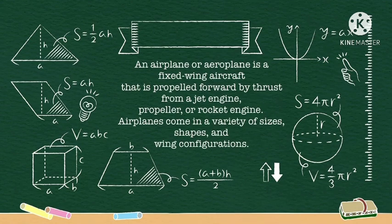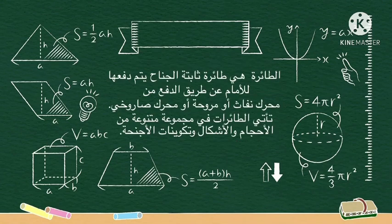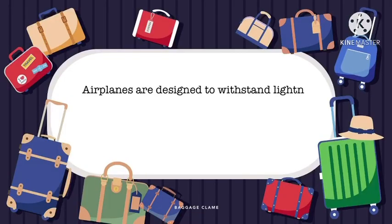Facts about airplanes — are you ready? An airplane is a fixed-wing aircraft that is propelled forward by thrust from a jet engine, propeller, or rocket engine. Airplanes come in a variety of sizes, shapes, and wing configurations.